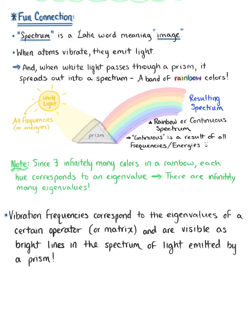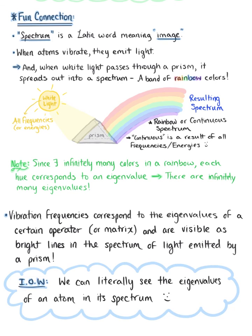The vibration frequencies correspond to the eigenvalues of a certain operator, or a matrix, and are visible as bright lines in the spectrum of light emitted by our prism. In other words, we can literally see the eigenvalues of an atom in its resulting spectrum.